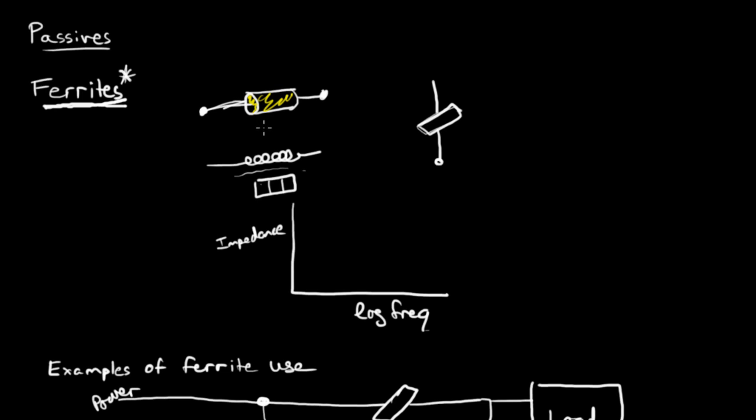Now, the schematic symbol for a ferrite is this. It's a diagonally shaped, diagonally facing box. And that's what you would plug into your schematic.